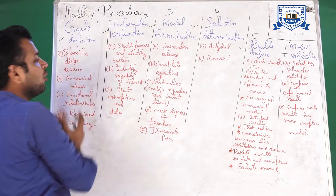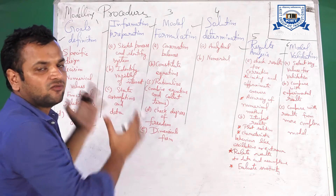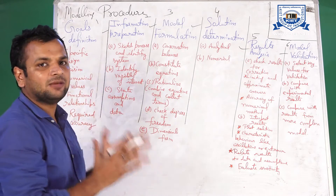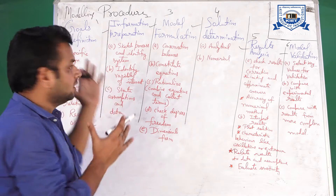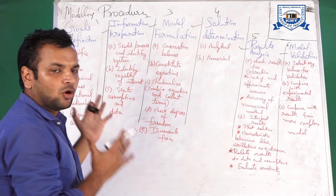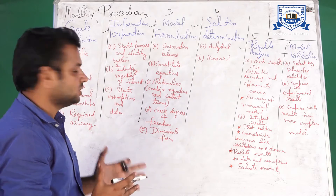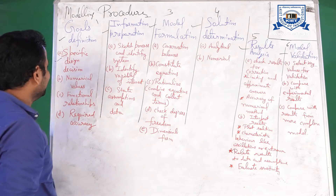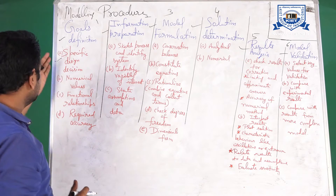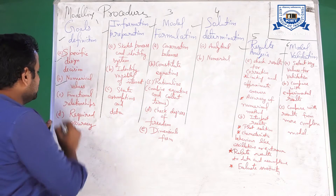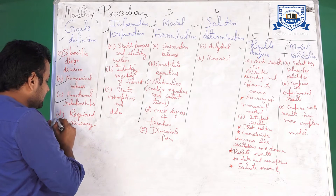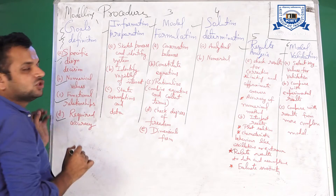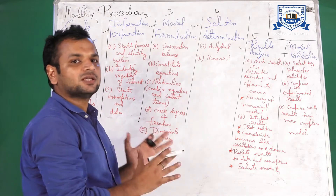There are a few points in each step regarding what you need to do when modeling any process. The first step is goals definition. The points in goals definition are: specific design decisions, numerical values, functional relationships, and required accuracy. These are the different goals you set to model your process.